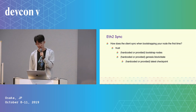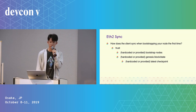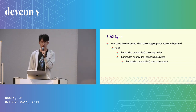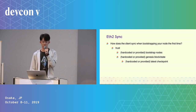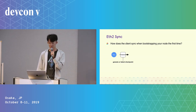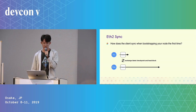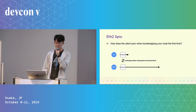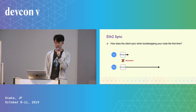First, how does the client sync when bootstrapping your node for the first time? You need to trust the bootstrap nodes and the genesis block and genesis state. Or if the genesis is already far in the past, you will trust the latest checkpoint instead. So given a trusted genesis or latest checkpoint, you connect to peers and first exchange the latest checkpoint, head blocks, and some other inputs to decide if you are on the same chain. If you are, you start requesting the missing blocks. If not, you simply disconnect.